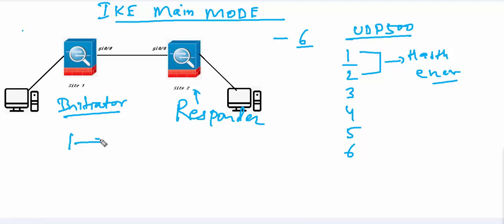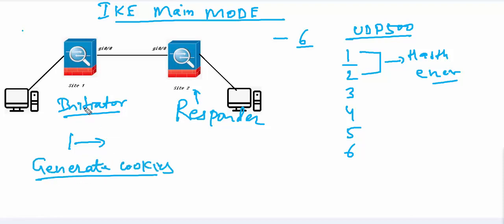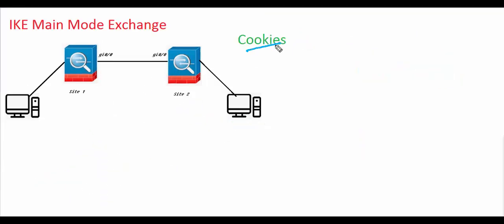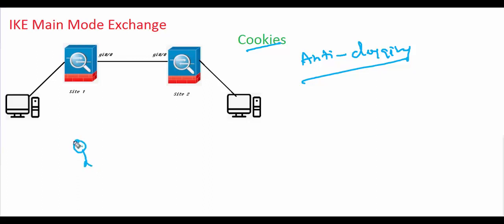Before the initiator sends the first message, both the initiator and responder independently generate their cookie values. Cookies protect against anti-clogging. If an attacker starts sending lots of VPN negotiation requests, the resources of the firewall will be clogged very rapidly, eventually causing it to stop responding — a kind of denial-of-service attack.